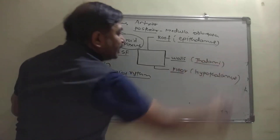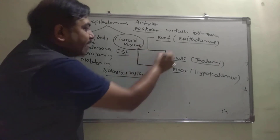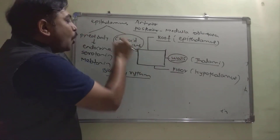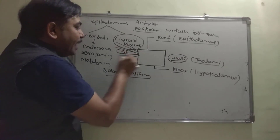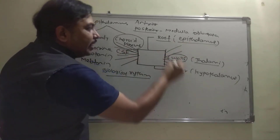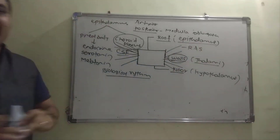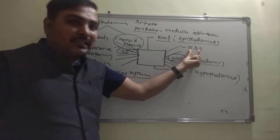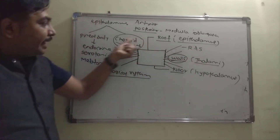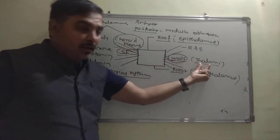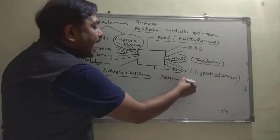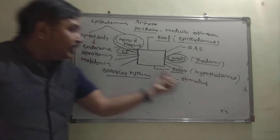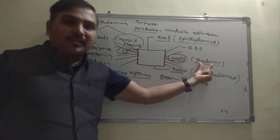The second part of the diencephalon is the thalami — the walls of the diencephalon. The thalamus is connected to almost all parts of the brain through a system called the reticular activating system (RAS). Its function is to activate the proper part of the brain according to the stimulus received.